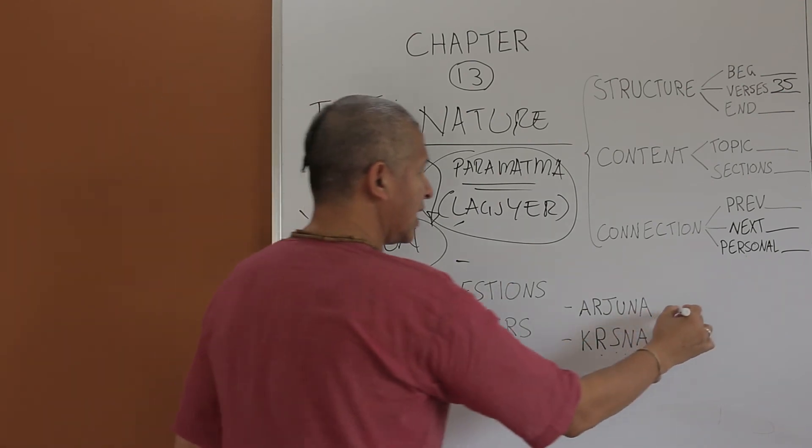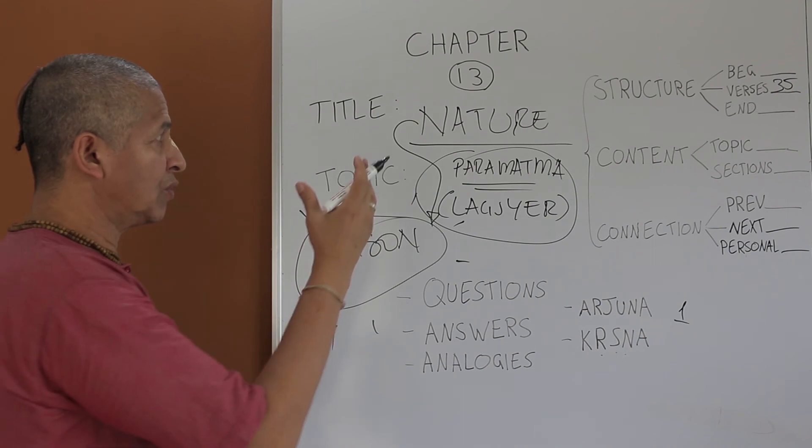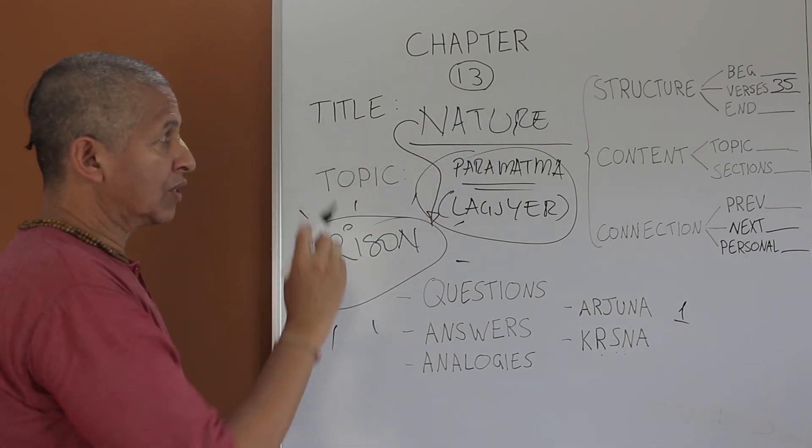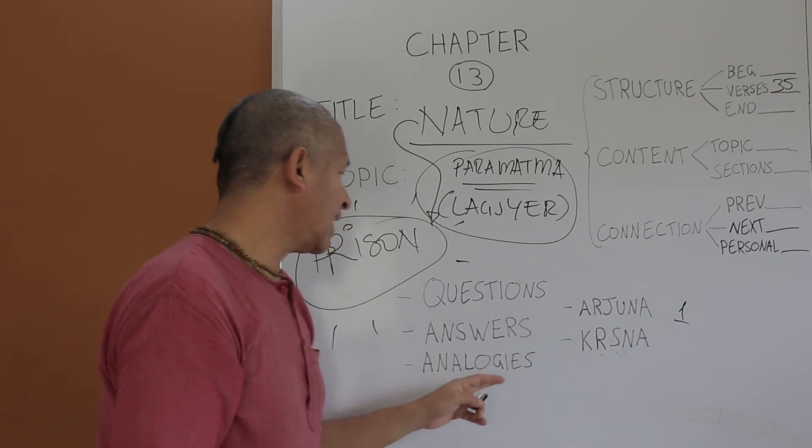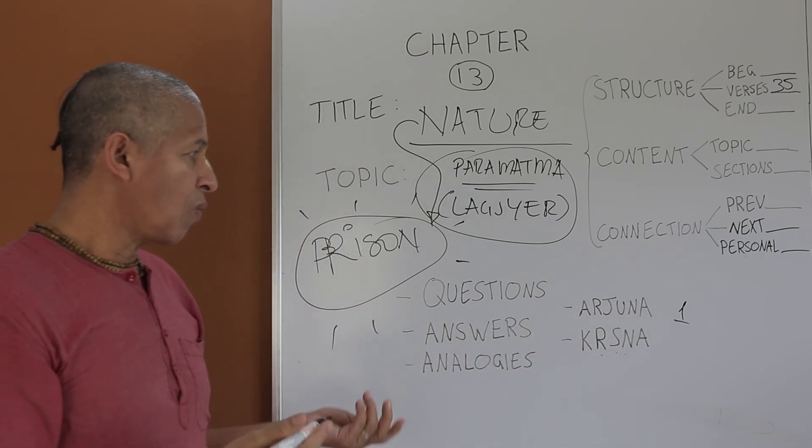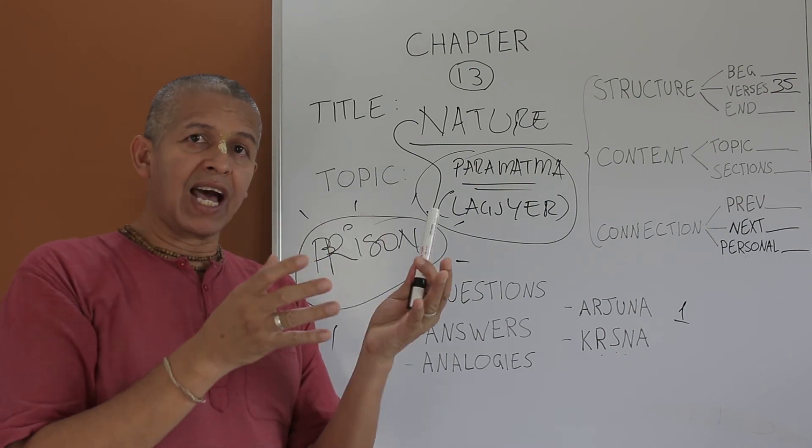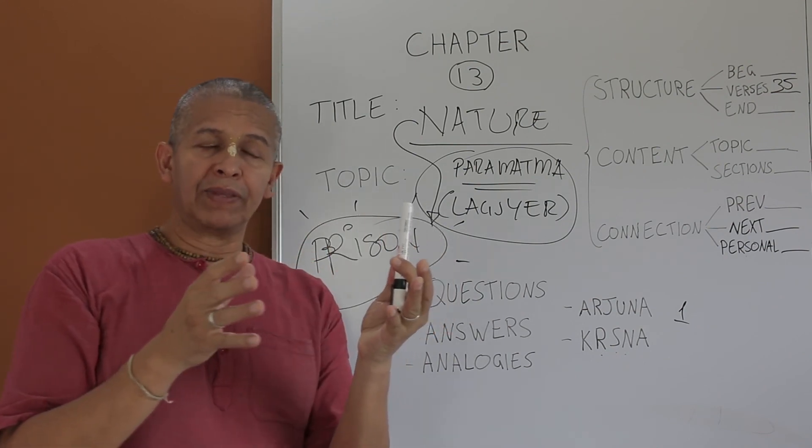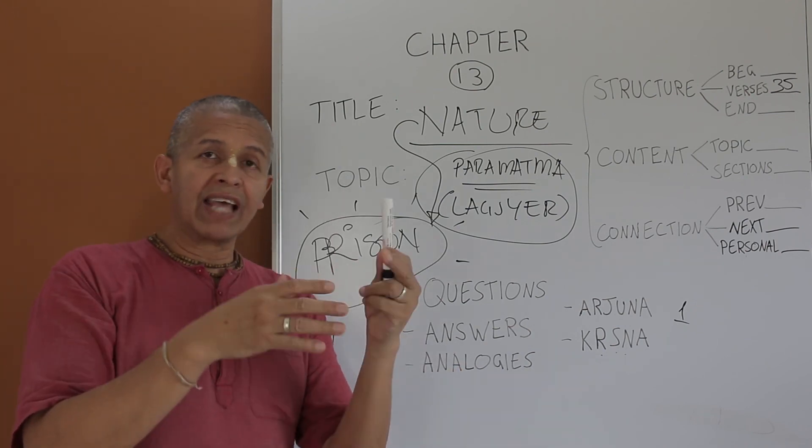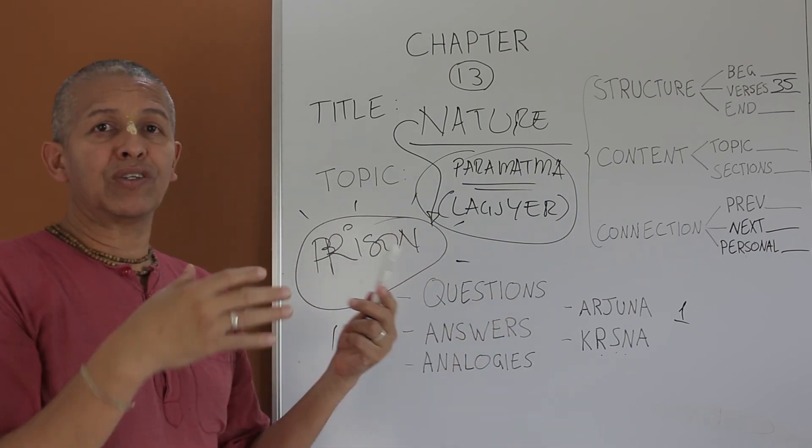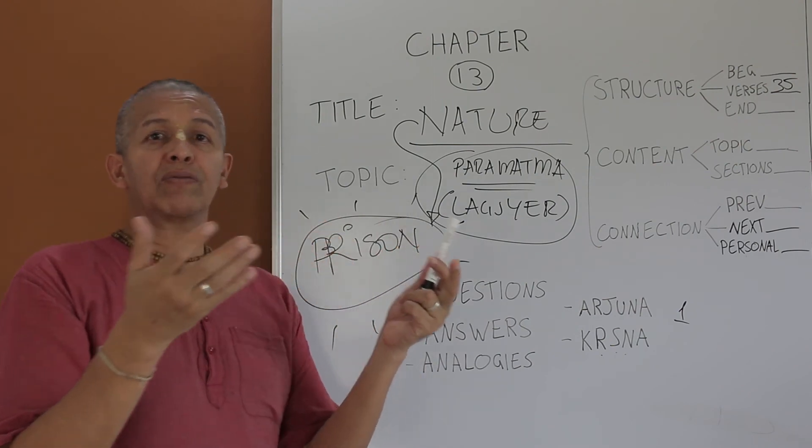Questions by Arjuna in text number one. Basically, the whole chapter is answers to Arjuna's six questions in this text. The analogies, there are two analogies. One is that the soul, just like the sky, is not mixed with anything. The sky doesn't mix with anything due to its subtle nature. In the same way, the soul doesn't mix with the body.